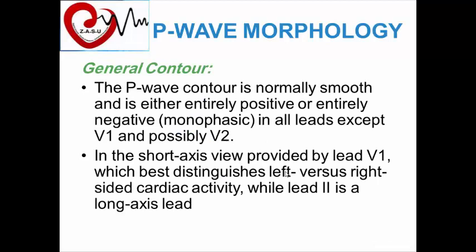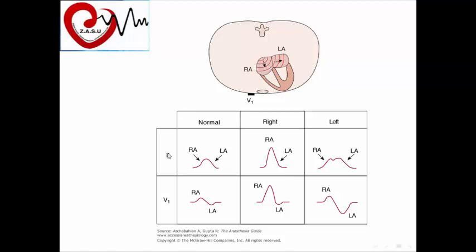P wave morphology: the P wave is normally a smooth, rounded wave. It is either entirely positive or entirely negative — monophasic — or may be biphasic, as seen normally in V1 and possibly V2. In lead 2, which is a long-axis lead, the P wave is rounded and positive. In V1, the P wave is biphasic: the first portion is positive, representing right atrial activity coming toward V1, and the last portion is negative, representing left atrial activity moving away from V1.